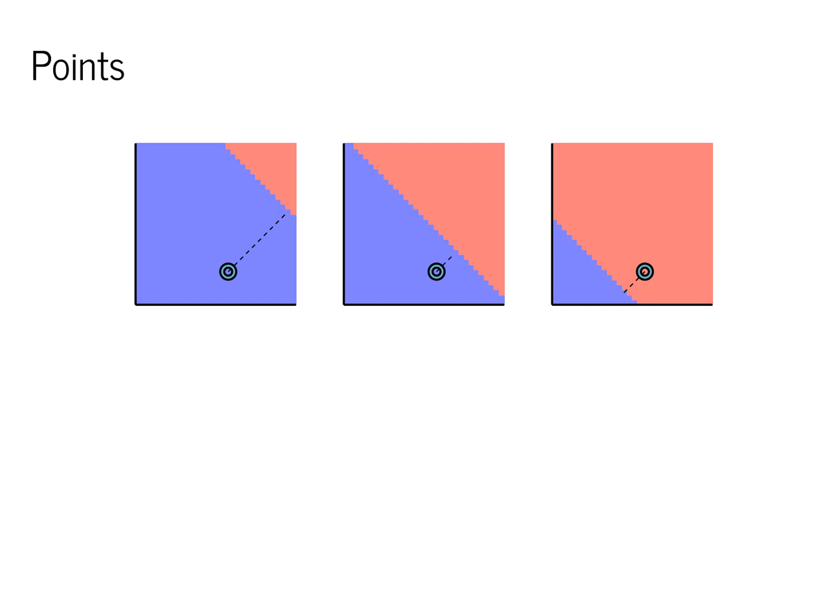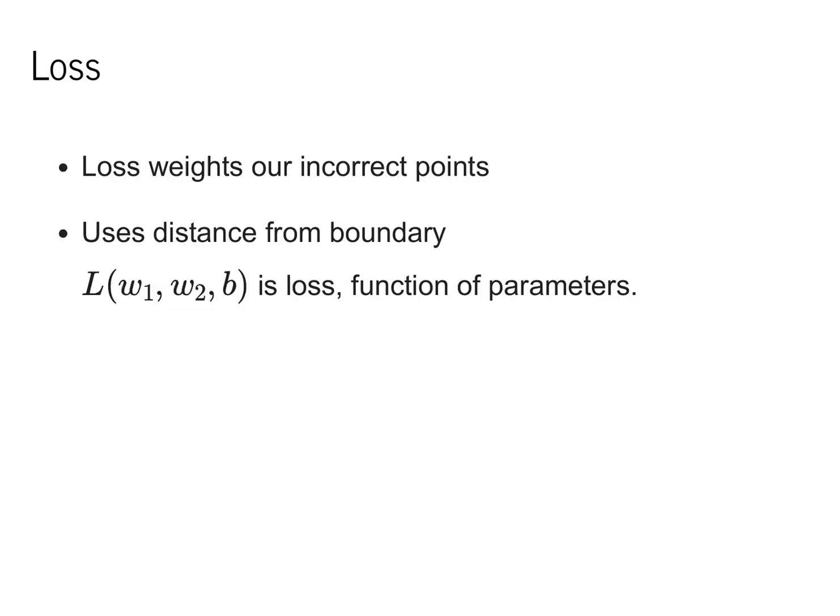In the third model, the point is clearly on the wrong side. We would like our loss to weight our incorrect points and utilize this distance as part of the function. In particular, we're going to define a function L that takes W1, W2, and B into consideration in order to determine the loss as a function of these parameters.